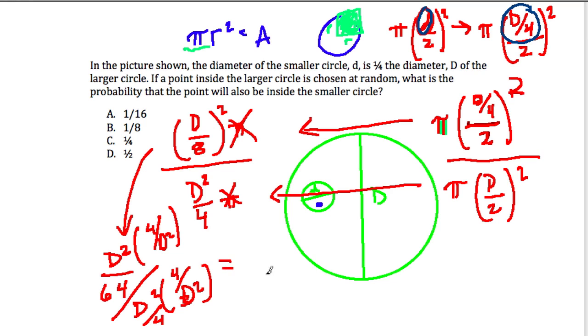And what's that going to give me? Well, in the numerator, I have D squared over 64 times 4 over D squared. And in the denominator, I have D squared over 4 times 4 over D squared.